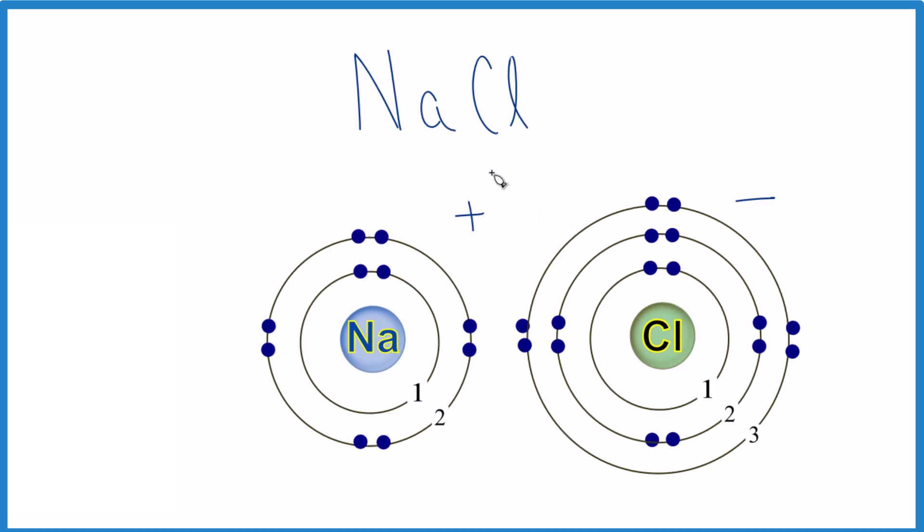And often you'll see when this is drawn as a Lewis structure, there'll be brackets. And that helps show that the electron now is lost. It's over here.